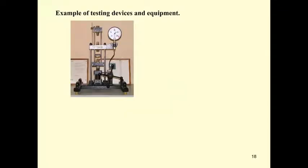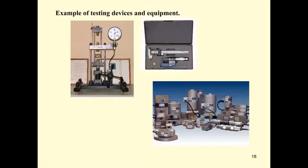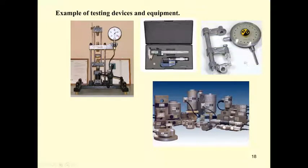Some examples of equipment used in materials testing: this is the universal testing machine, which can be used for tension tests and compression tests. On this machine, we have a scale to measure the force, or for other UTMs you may have a load cell to measure the force. You also have the vernier caliper and micrometer to measure length or deformation of the specimen, and an extensometer to measure elongation. We will use the extensometer a lot in our lab.